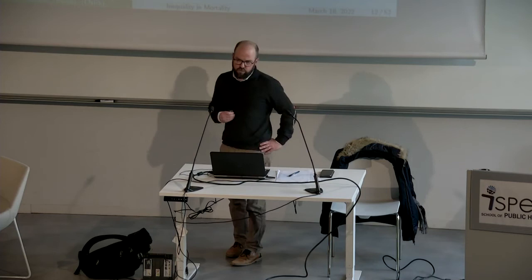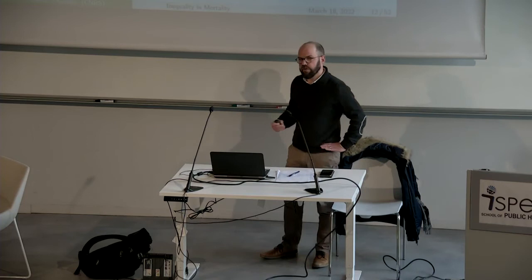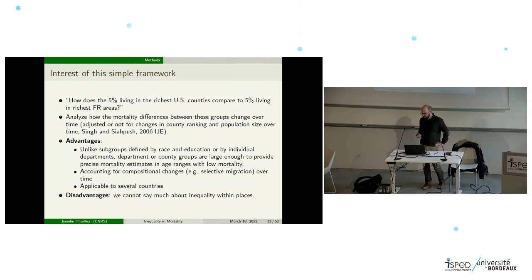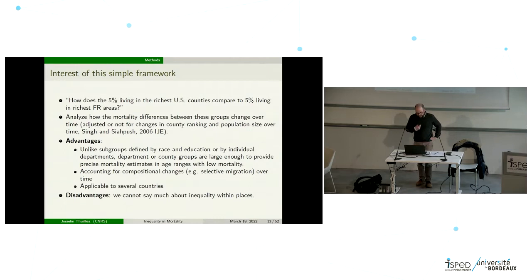The causal analysis classically done in econometrics is not the purpose here — we are not trying to analyze the causal determinants of mortality. But by comparing different countries we stay close to the data with a graphical approach, and we can move toward causality if we compare countries with very different systems, like France and the US. With this framework we can answer: how does the 5% living in the richest US counties compare to the 5% living in the richest French areas, and similarly for the poorest areas.